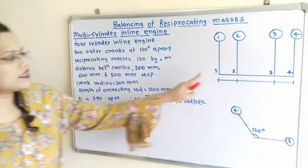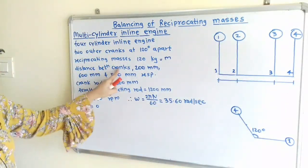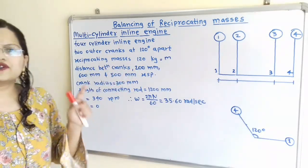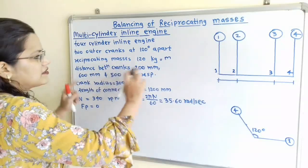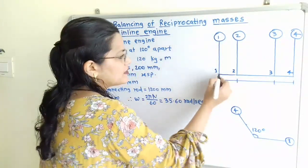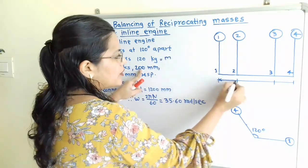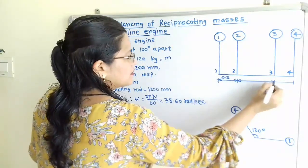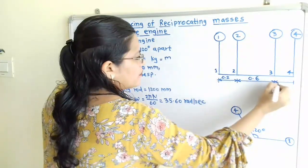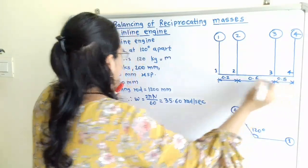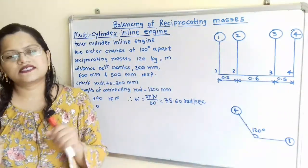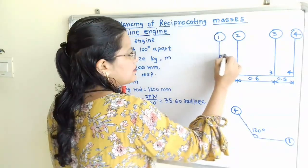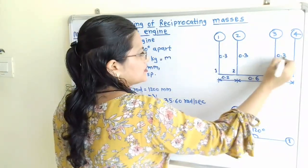The distances between the cranks are mentioned: distance between planes 1 and 2 is 0.2 m, between planes 2 and 3 is 0.6 m, and from plane 3 to 4 is 0.5 m. The crank radius is 300 mm, so for all cylinders the radius is 0.3 m. The length of the connecting rod L is 1200 mm, equal to 1.2 m.